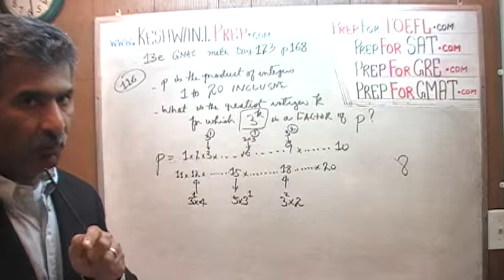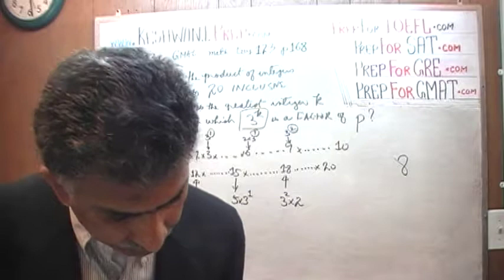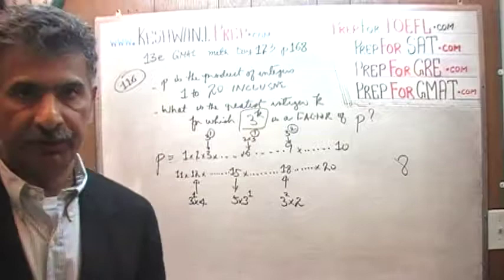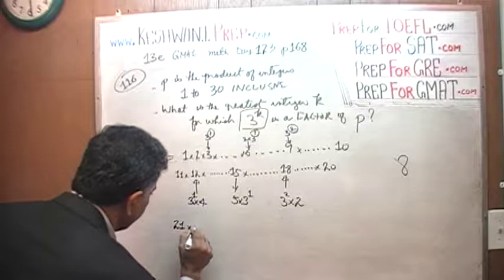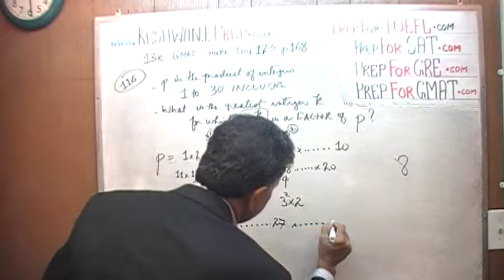Don't be hasty and pick 12 as your answer. Did they put 12 as one of the answer choices? Of course it's there. Now let's graduate to 30. We have one more line of numbers: 21, 22, 23, 24, 25, 26, 27, 28, 29, 30.